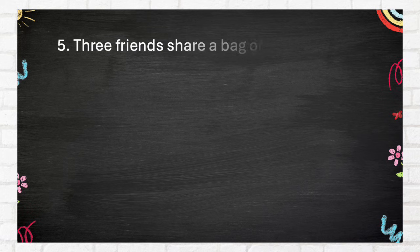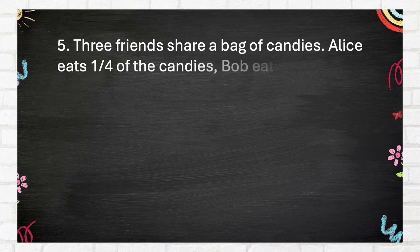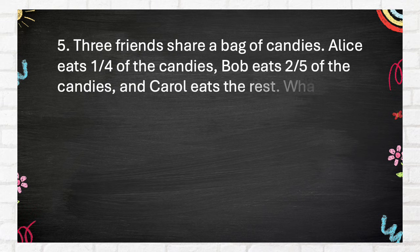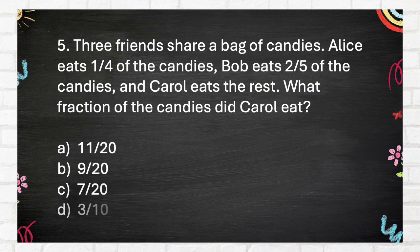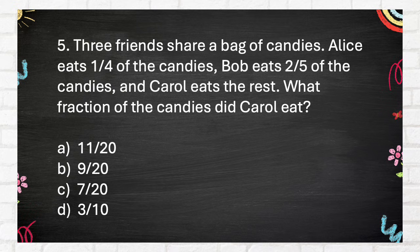Number 5. Three friends share a bag of candies. Alice eats one quarter of the candies, Bob eats two fifths of the candies, and Carol eats the rest. What fraction of the candies did Carol eat? A. 11 twentieths. B. 9 twentieths. C. 7 twentieths. D. 3 tenths.